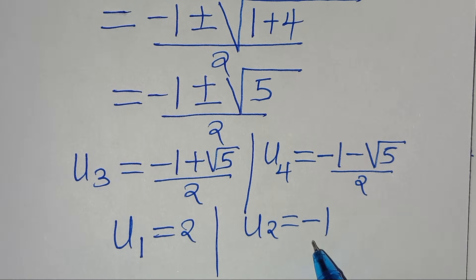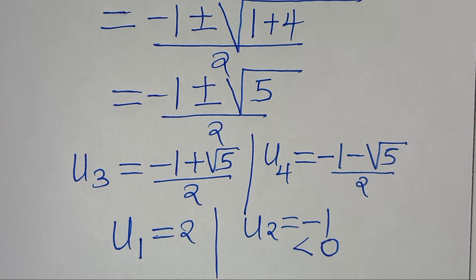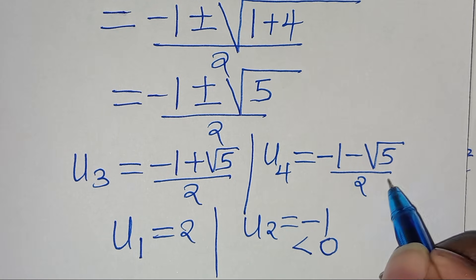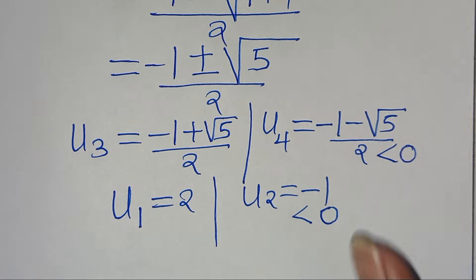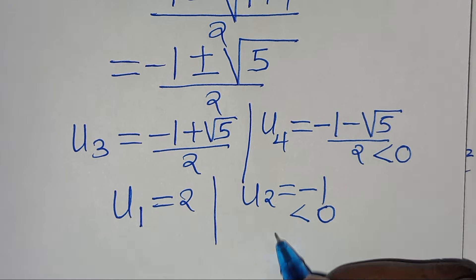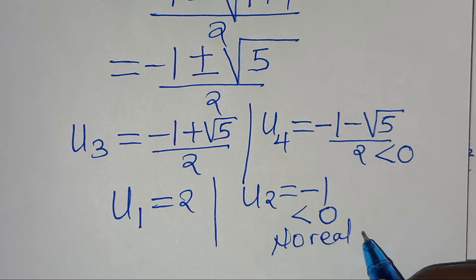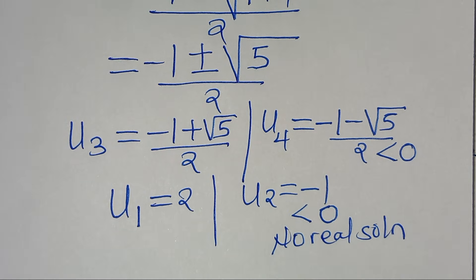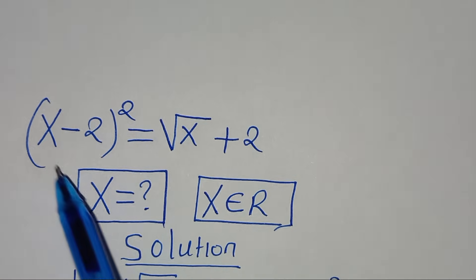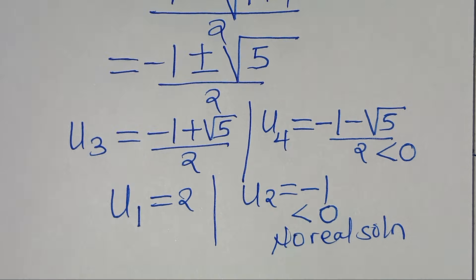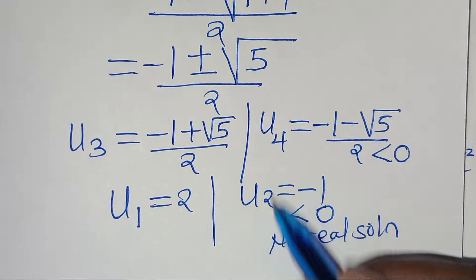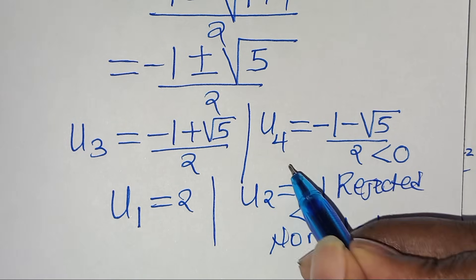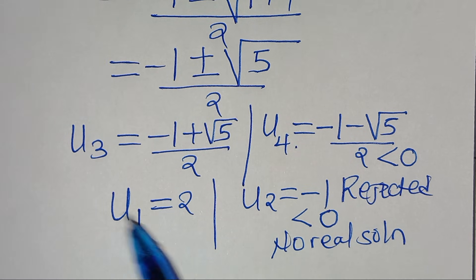Now u₂ is less than 0, and (minus 1 minus √5) over 2 is also less than 0. These will not give us a real solution that will satisfy the equation, so there is no real solution from these. Therefore we reject u₂ and u₄, and focus on u₁ and u₃.